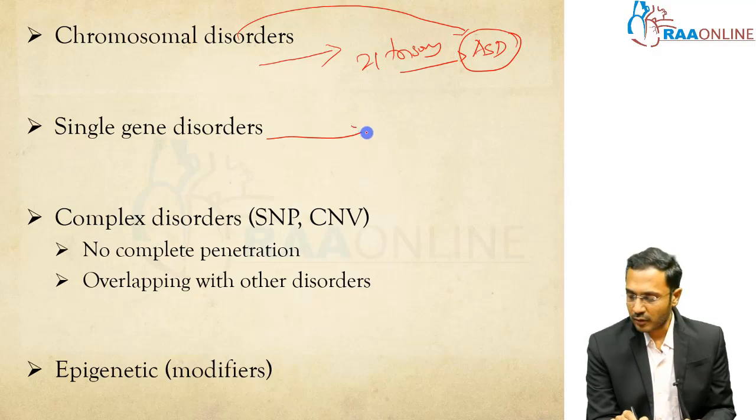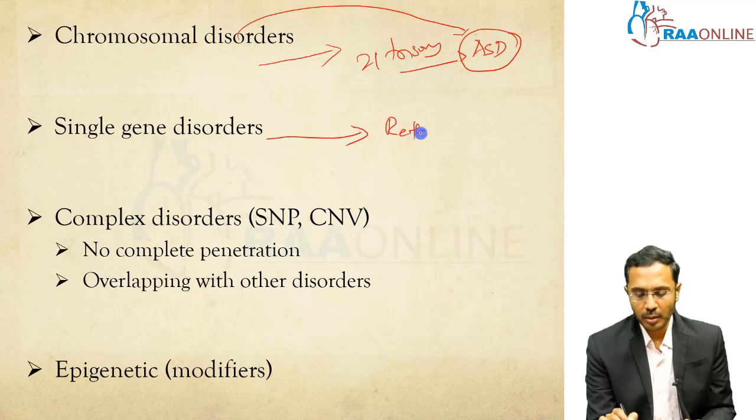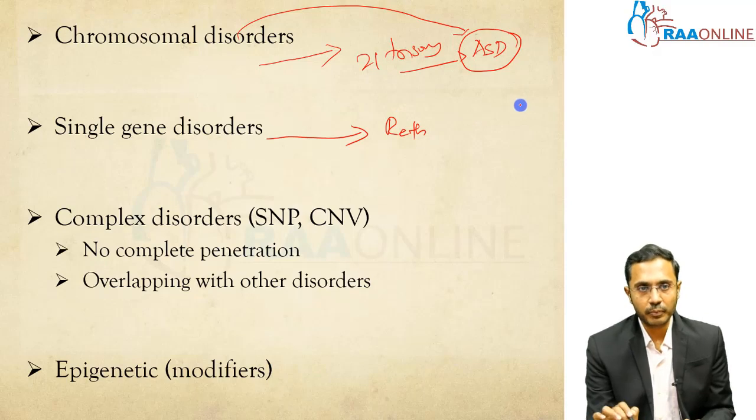Single gene disorders like Rett syndrome — MECP2 mutation — can present as Autism Spectrum Disorders.